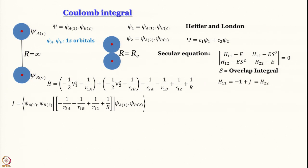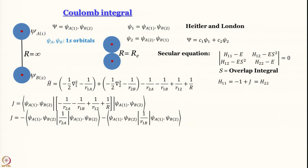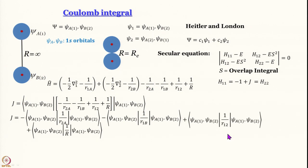H_22 is also equal to minus 1 plus J. The only difference between H_11 and H_22 is that wherever there is electron label 1 you write 2 and vice versa, but it makes no difference in the final form since J is a constant for a given capital R. Now let us expand J as a sum of four terms: the first is minus the integral of psi_a(1) psi_b(2) times 1/r_{2a} times psi_a(1) psi_b(2); the second replaces r_{2a} with r_{1b}; the third has 1/r_{12} for electron-electron repulsion; and the fourth has 1/R for nucleus-nucleus repulsion.